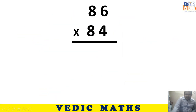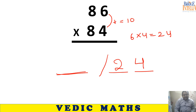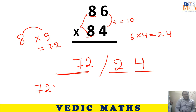86 into 84: 6 plus 4 equals 10. Two blank spaces: 6 into 4 equals 24, write 24. First blank: 8 is identical, multiply by next natural number — 8 into 9 equals 72. Write 72. Final answer: 7224.